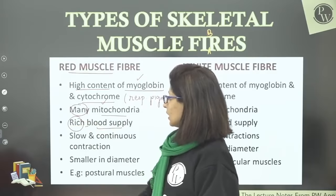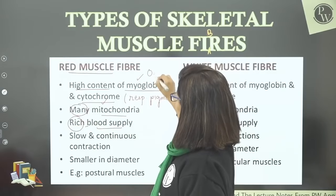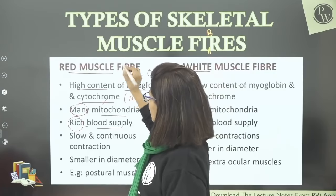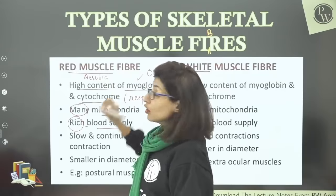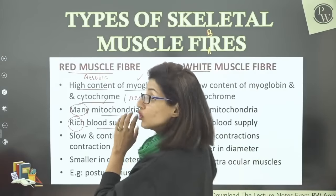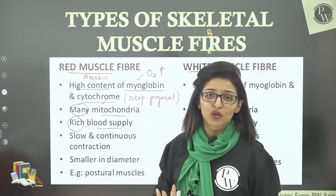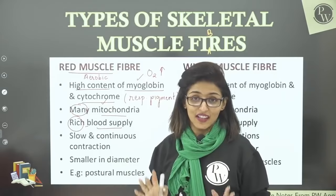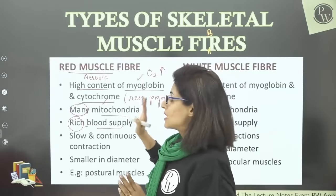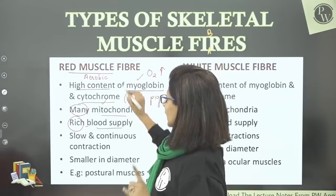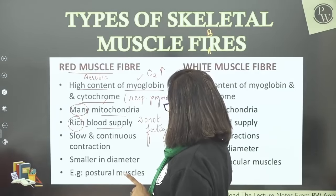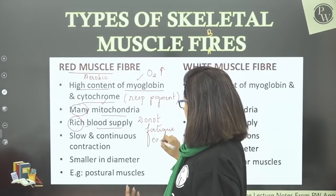Blood supply is also more in red muscle fibers. So more mitochondria, more myoglobin, more oxygen — in this situation, aerobic respiration lasts longer. Red muscle fibers respire aerobically for a longer time. Anaerobic respiration does occur, but much later, because they have lots of oxygen stored in their myoglobin, lots of mitochondria, and lots of blood bringing oxygen and food. So they do not fatigue easily.